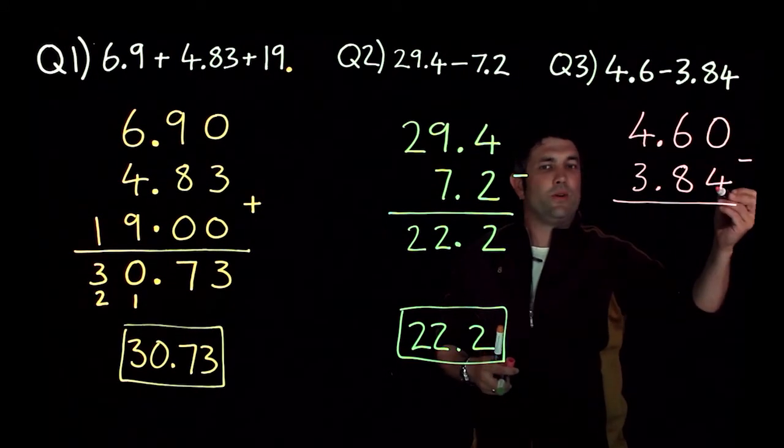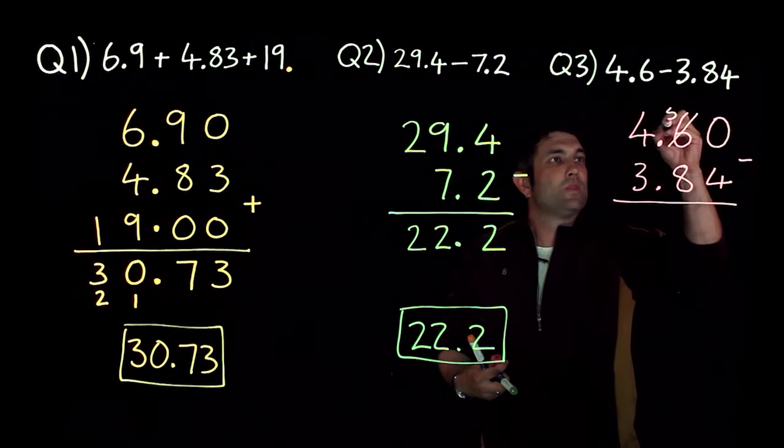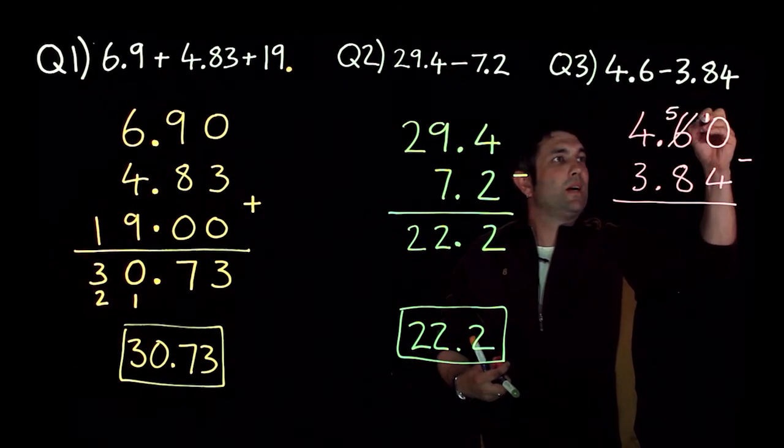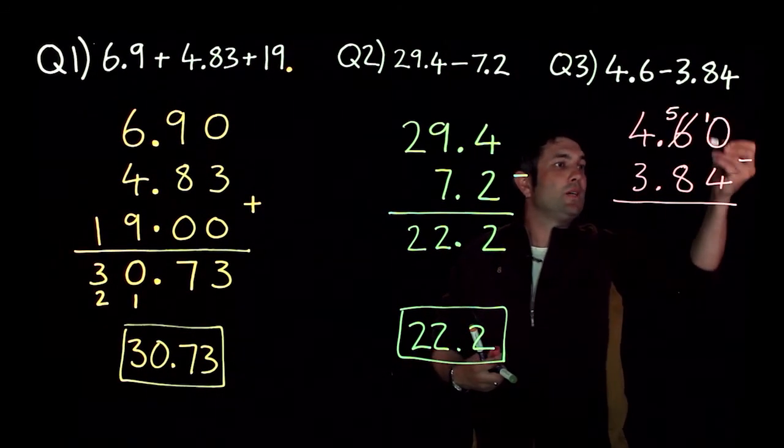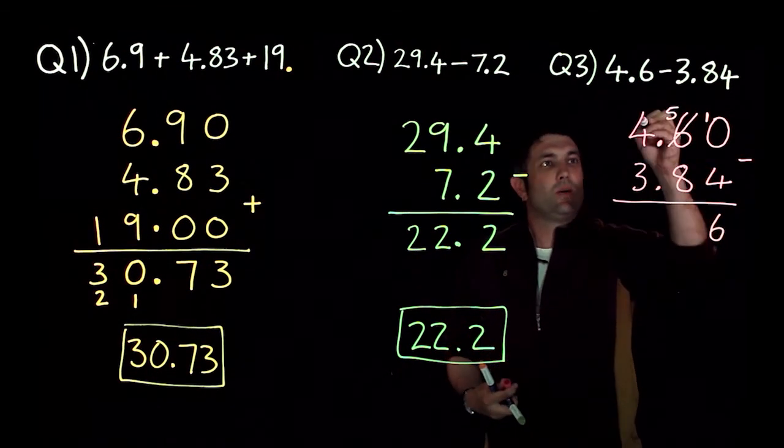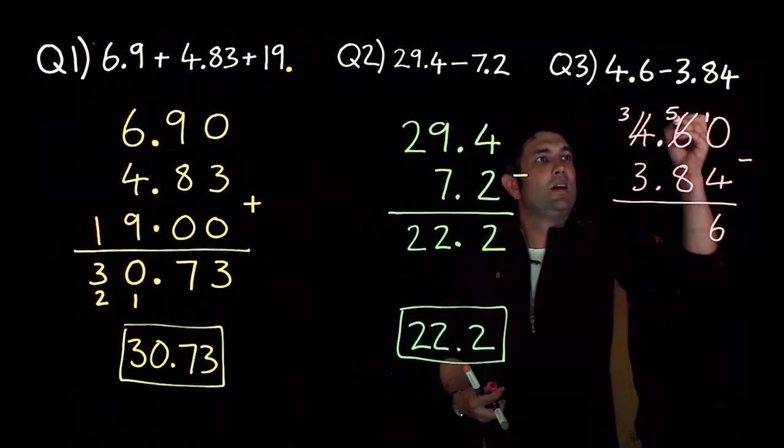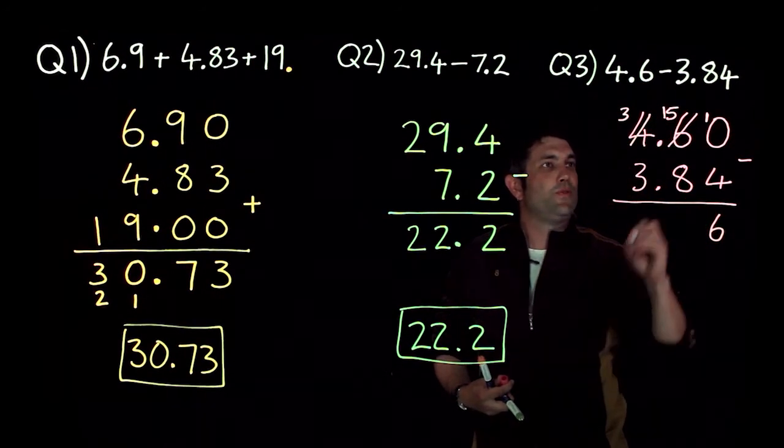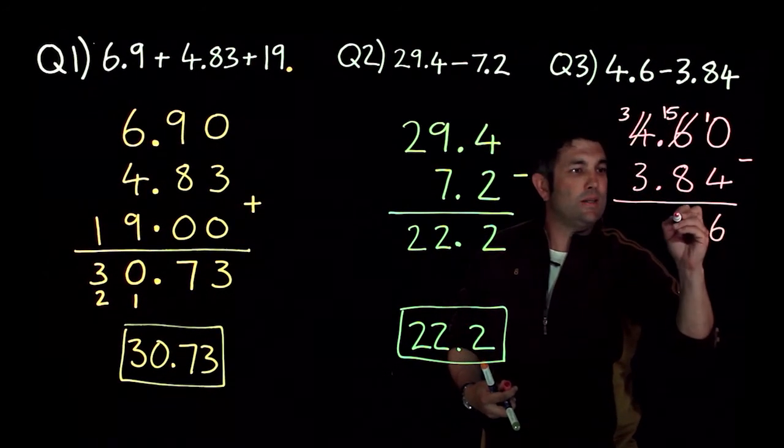Now 0 take away 4, I don't want to do that I'm gonna have to do some borrowing. So I'll take a 10 from there and that becomes 10 there. 10 take away 4 is 6. 5 take away, oh dear I'm gonna have to do some more borrowing again. So that becomes 3, that becomes 15. 15 take away 8 is 7.